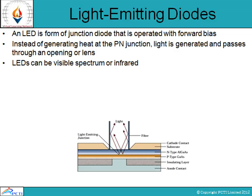Light emitting diodes emit light towards a specific direction. The deflection of the waves generated by this light emitting diode is maximum by a 30-degree solid angle. A light emitting diode is a normal PN junction diode — at the junction it emits some light. We put some free space to allow the light to go out. This is how an LED works.